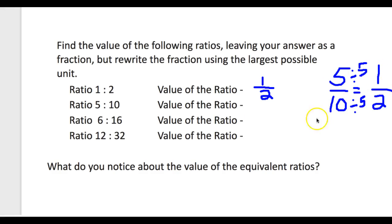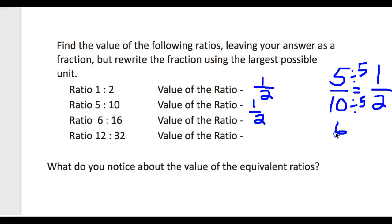When we take the ratio of 5 to 10, we write the value as a fraction and simplify it, and we actually get one-half. Now, 6 to 16 — if we write that as a fraction and divide the numerator and the denominator by 2, we will get three-eighths.